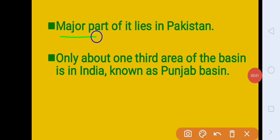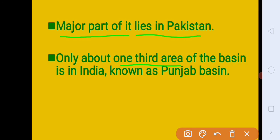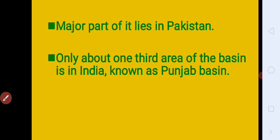Major part of the Indus Basin lies in Pakistan. Partition ke baad dekha jaye toh Indus Basin ka zyada jo bhag hai vo Pakistan mein chala gaya tha. Isliye India ke paas sirf one-third part hai — that is, in India, the part of Indus Basin. And that is known as Punjab Basin, jisko hum Punjab Basin ke naam se jante hain.